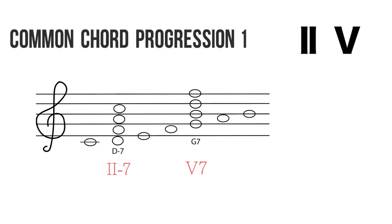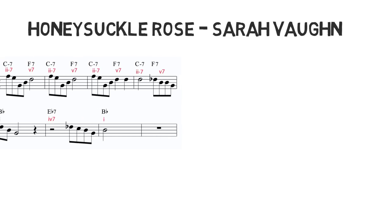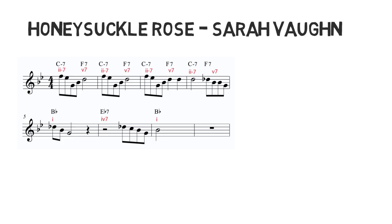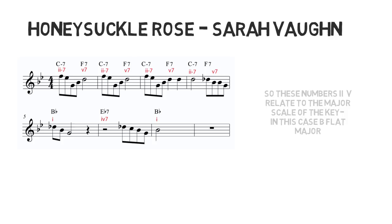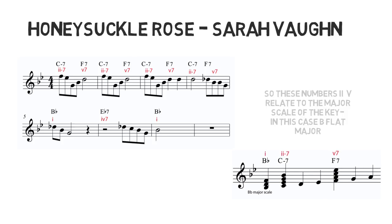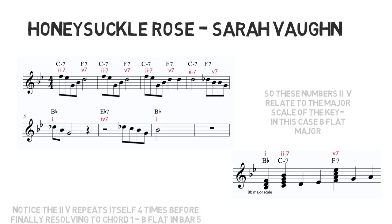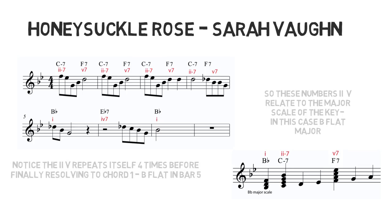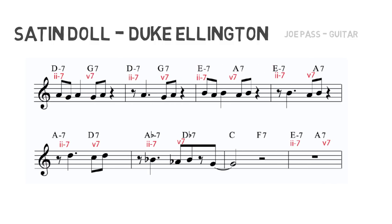Let's hear this progression now on 'Honeysuckle Rose,' a jazz classic sung by Sarah Vaughan in B-flat. You can see the two-five progression repeats itself four times before finally resolving to the one chord, B-flat. Now let's hear this progression on another jazz classic, 'Satin Doll.'